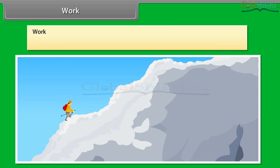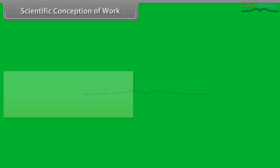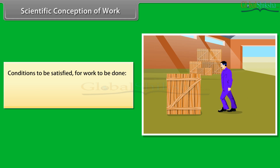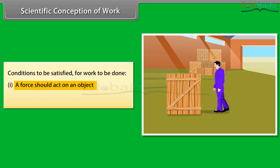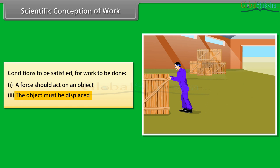For example, if we climb up a cliff, then according to science, we have done lots of work. Scientific conception of work: for work to be done, these two conditions should be satisfied. First, a force should act on an object. Second, the object must be displaced.